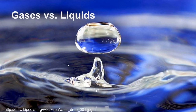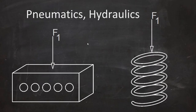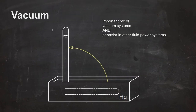We called this lecture fluid power but we didn't really talk about what a fluid is. Fluids can be gases or liquids. Pneumatics is a gas system generally based on compressed air, and hydraulics consists of moving hydraulic fluid. There are some important differences between these two types of fluid power systems, and there's also vacuum.